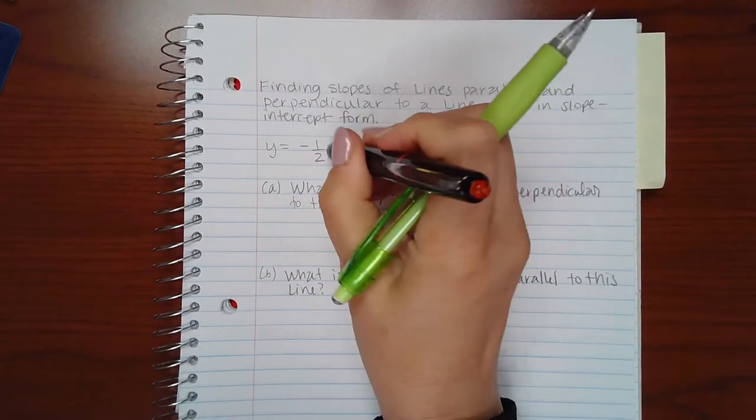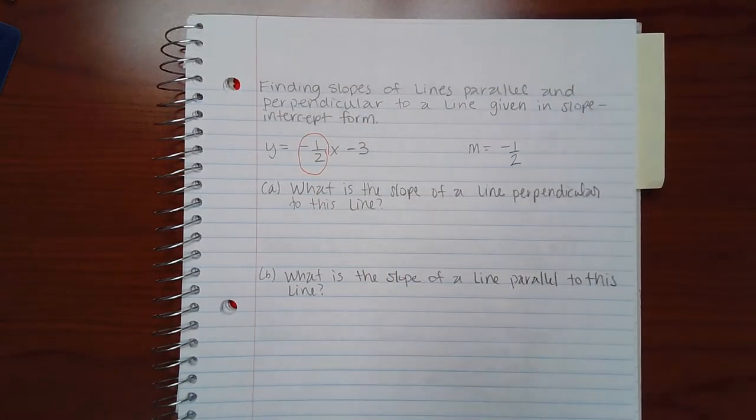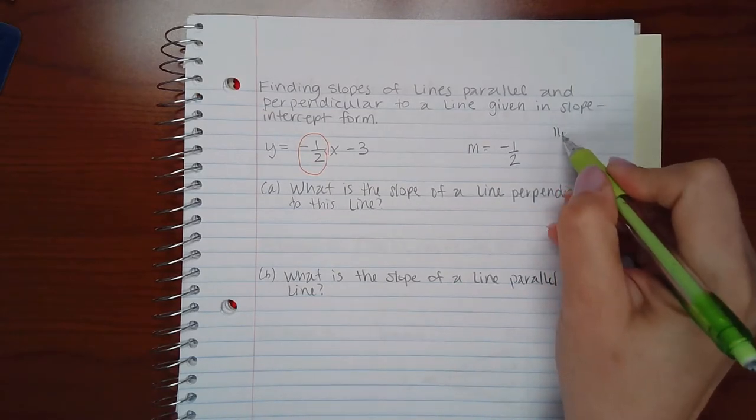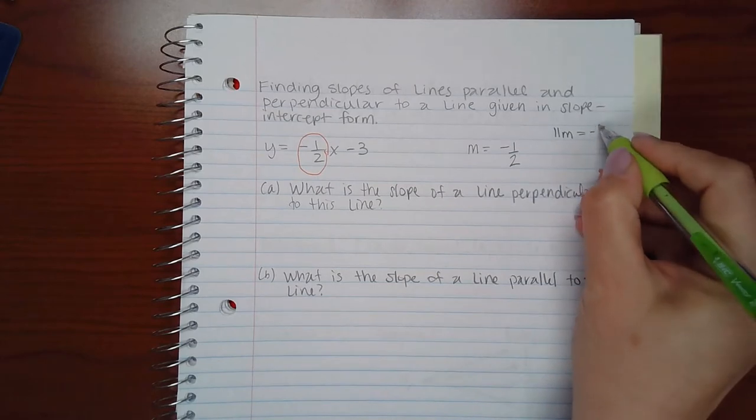It's going to be whatever that coefficient of x is, which is negative one-half. Now, what we need to know is that a parallel slope will be exactly the same as this, negative one-half.